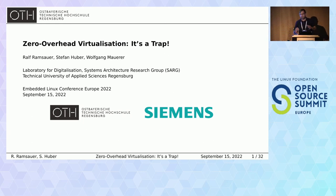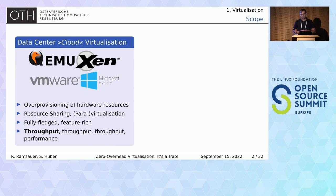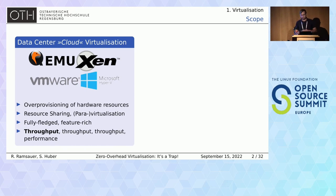Before I start I would like to set the frame of this talk and explain what we do not mean by embedded virtualization. Starting with data center or cloud virtualization — products like QEMU, KVM, Xen, VMware or Hyper-V. The key aspects of those virtualization technologies is over-provisioning of hardware resources, meaning guests can have more resources available than are actually available on the platform — CPUs, memory, devices and so on. This is made possible by sharing physical resources through sophisticated techniques like para-virtualization. The overall optimization criteria of those systems is throughput and performance.